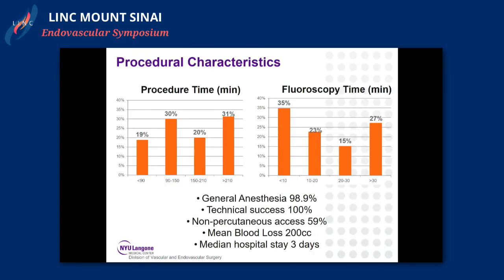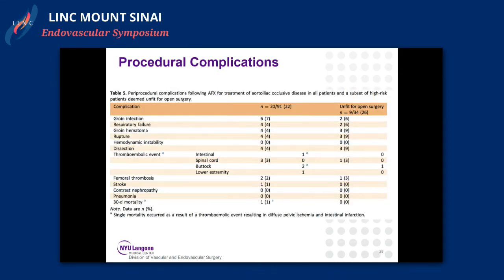Procedural characteristics: procedure time and fluoroscopy are shown here. General anesthesia was required in the majority of cases. Technical success was 100%. Non-percutaneous access was used in roughly two-thirds of patients, with a mean hospital stay of about three days. Importantly, comparing the cohort unfit for open surgery versus the other group, there was no difference in complication rate between the two groups, suggesting that higher-risk patients benefit from this minimally invasive technique.